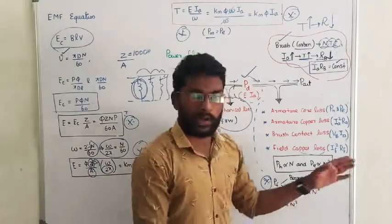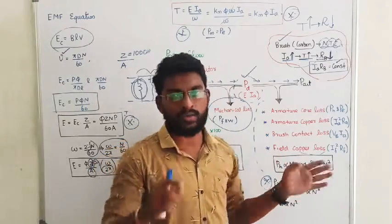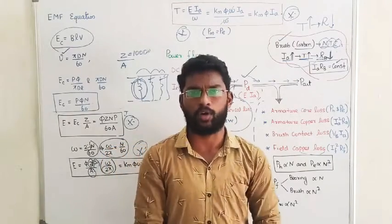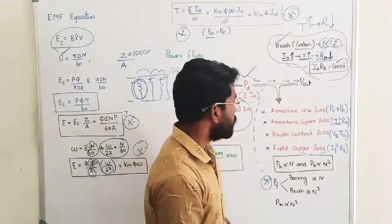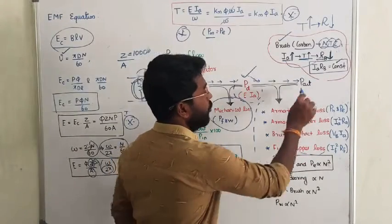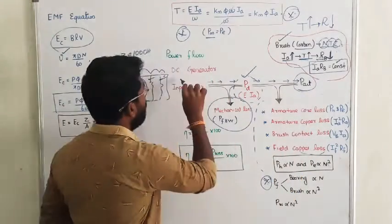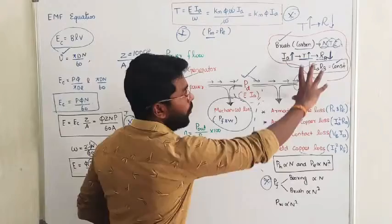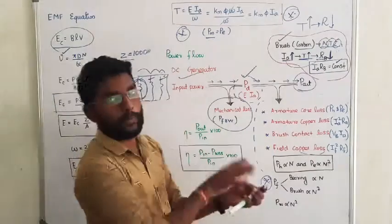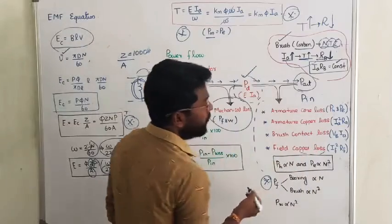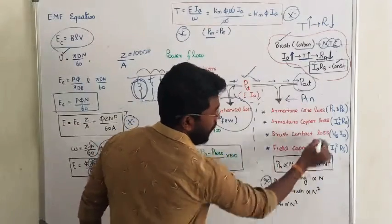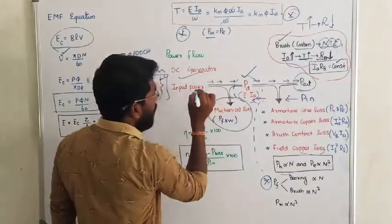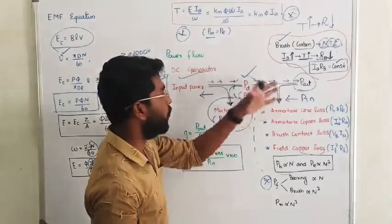The last electrical loss is field copper loss — the field winding is made of copper, so there is always a field copper loss. After subtracting all electrical losses from developed power, we arrive at the output power. That completes the power flow diagram of the DC generator. For the motor, simply reverse the diagram: input is electrical power, subtract electrical losses to get air gap power, subtract mechanical losses to get output mechanical power.